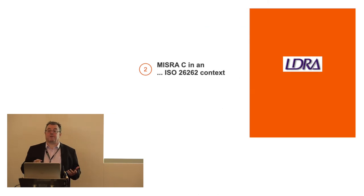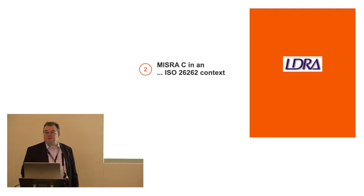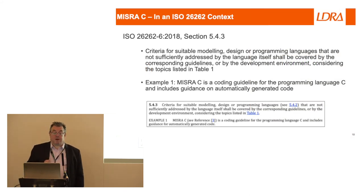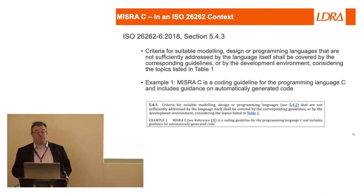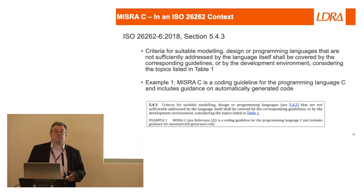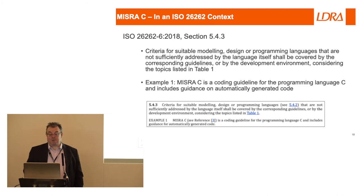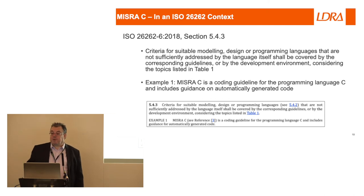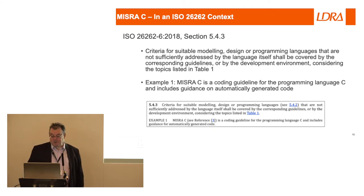Now, the 26262 context: where does this all fit together? I'm assuming because you're here you're automotive-ish and you have to worry about those numbers. The standard itself says we've got to specify criteria — you can read it on the screen — and it cites MISRA C as a coding guideline that does this. Quite a few of us from MISRA were involved with 26262; that is not a coincidence. MISRA C is there in the standard as good practice. In the 2018 version we debated whether we ought to also say MISRA C++, but that's a bit legacy and we haven't quite got the next version done, so maybe the next version will cite C++ as well.